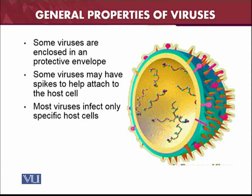Some viruses are enclosed in a protective envelope. Viruses are made up of three things: RNA, capsid, and envelope or non-envelope. Some viruses have an envelope which is a protective coat surrounding the capsid. Some viruses may also have spikes on the envelope, and these spikes help in attaching to and entering the host cell, which is very important for the virus life cycle.